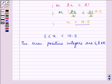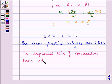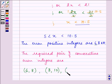So, the required pair of consecutive even integers are first of all 6 and 6 plus 2 becomes 8. 8, 8 plus 2 becomes 10. Next is 10 and 10 plus 2 becomes 12.